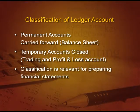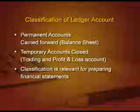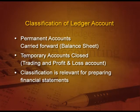Wages is transferred to trading account and salary is transferred to profit and loss account. Trading account, P&L, and balance sheet will come in the chapters ahead, so right now we are just telling you where they go. This classification is relevant for preparing financial statements. We prepare the trading account to get gross profit, the profit and loss account to get net profit, and the balance sheet to get assets, liabilities, and the position of the company as at a particular date. These will be discussed in detail in the chapter on final accounts.